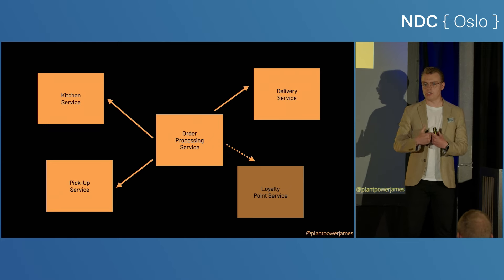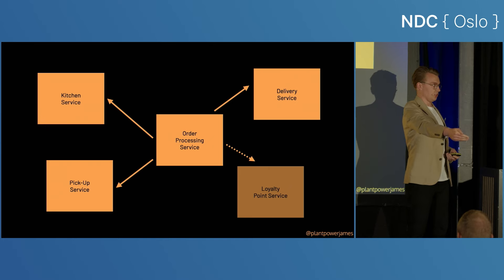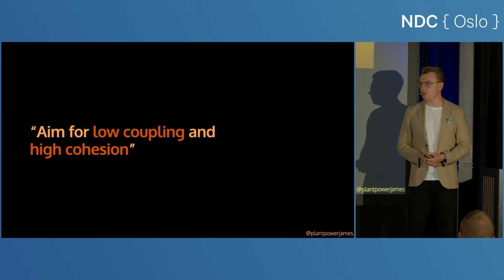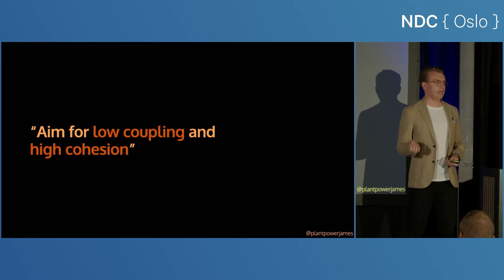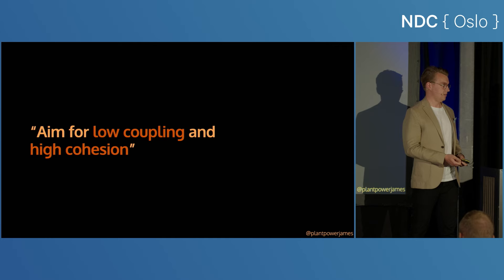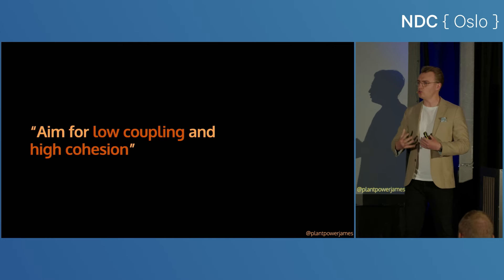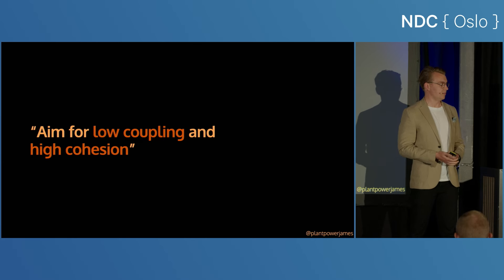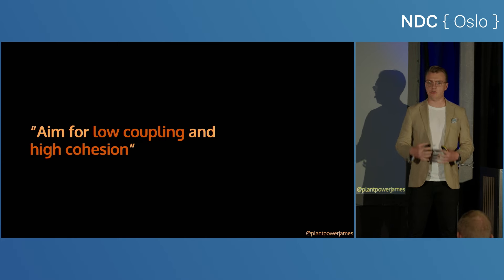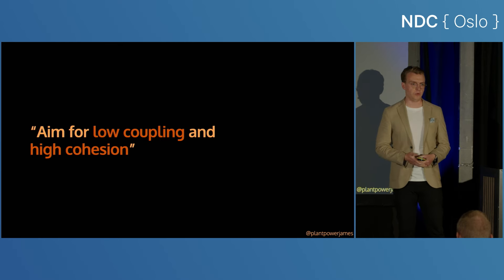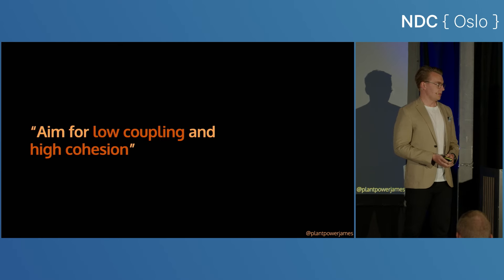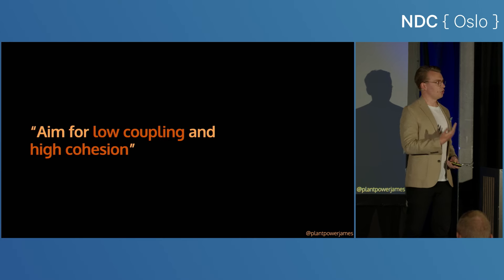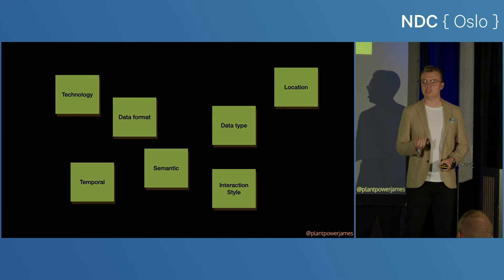I'm sure many of you will be familiar with the general rule of thumb in software: you want to aim for low coupling and high cohesion. Cohesion is relatively straightforward — you've almost solved that already. Cohesion is the idea that things that change together should live together. You're already building microservices with nicely contained pieces of business functionality split up by domain. Coupling is a little bit more difficult though, because it's a lot more nuanced. There are lots and lots of different types of coupling.